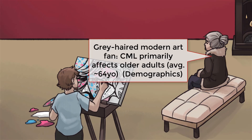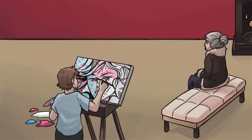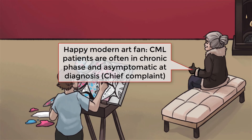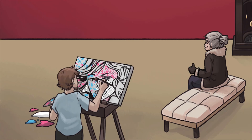Chronic myeloid leukemia accounts for 15% of leukemias in adults, with a median age of 65 at diagnosis. However, CML does occur in all age groups. Many patients are asymptomatic and diagnosed incidentally based on routine laboratory testing — just like this Lichtenstein fan over here, giving the thumbs up, happy and symptom-free.